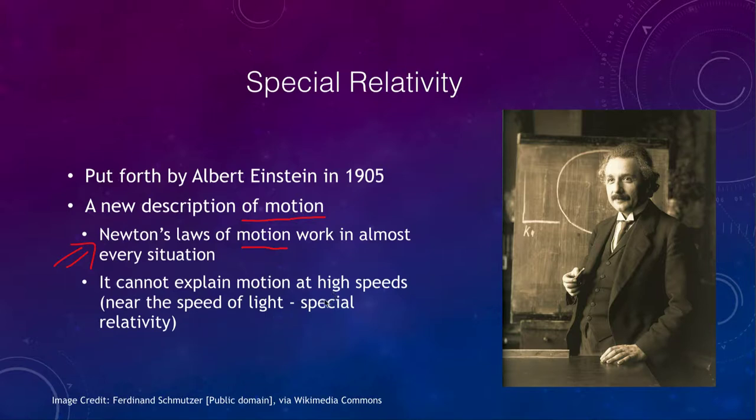For example, they cannot explain motions at high speeds, those near the speed of light. This is something that Newton's laws cannot predict correctly. This is where special relativity was put forth by Einstein in 1905 to be able to explain.